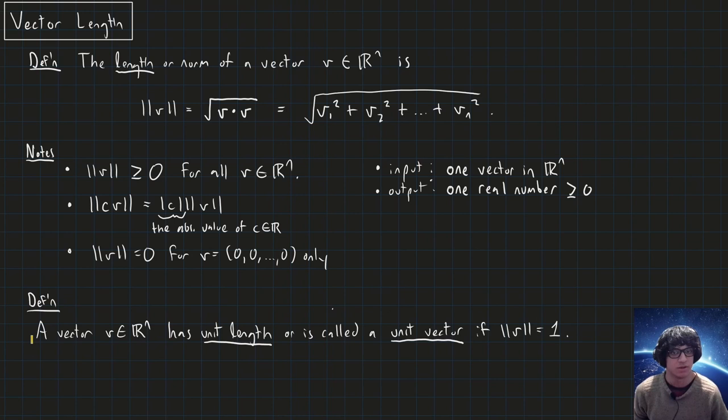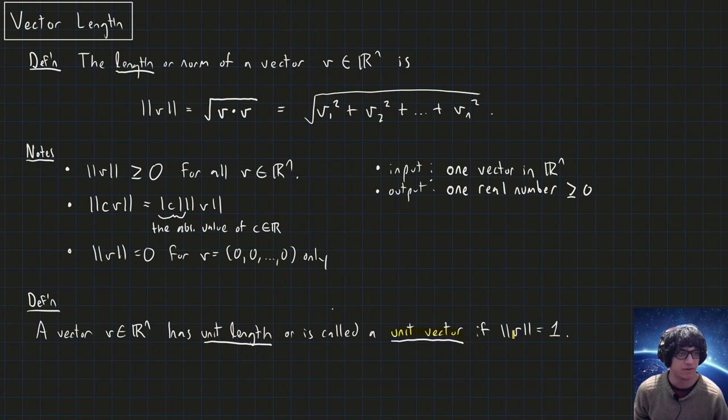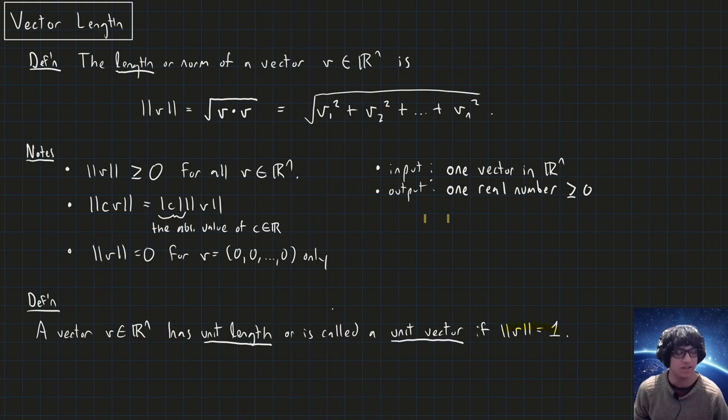We'll introduce this vocabulary: a vector is said to have unit length, or is called a unit vector, if its length is one. We give these vectors a special name because vectors with unit length have very nice computational properties, and we'll be seeing a lot of unit vectors.